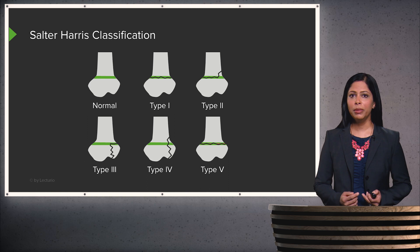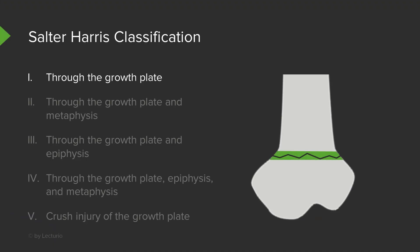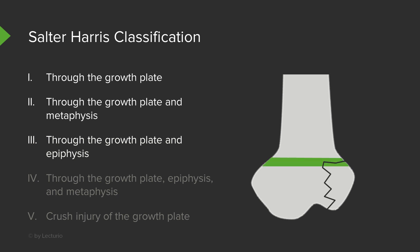The most commonly used classification for pediatric fractures is called the Salter-Harris classification. A Salter-Harris I fracture involves the growth plate. A Salter-Harris II fracture goes through the growth plate and through the metaphysis. A Salter-Harris III will go through a portion of the growth plate and the epiphysis. A Salter-Harris IV will go through the growth plate, the epiphysis, and the metaphysis.